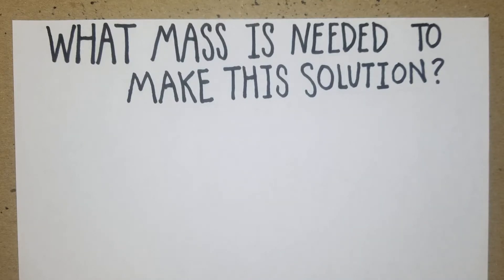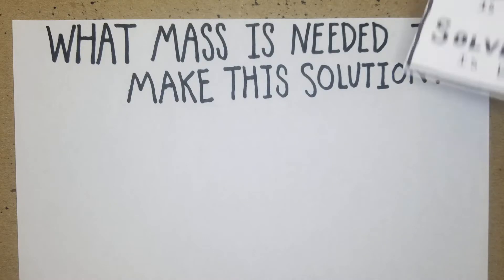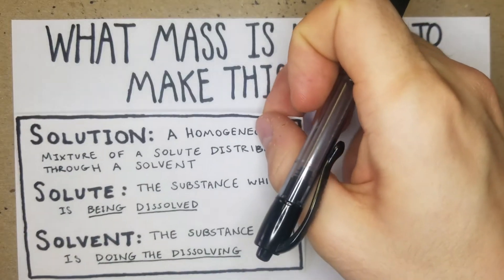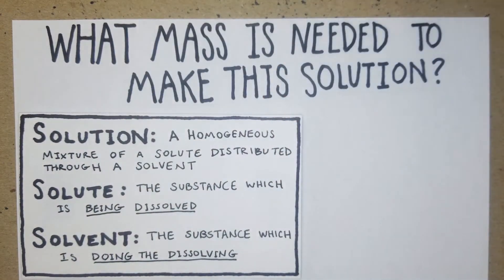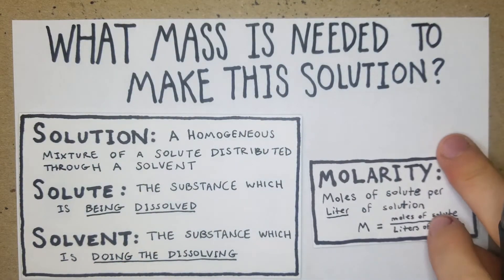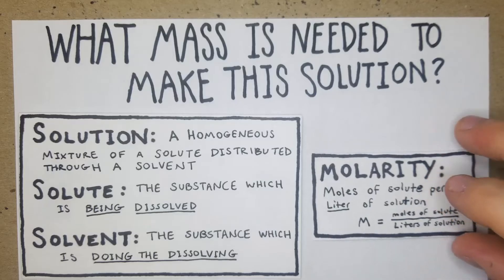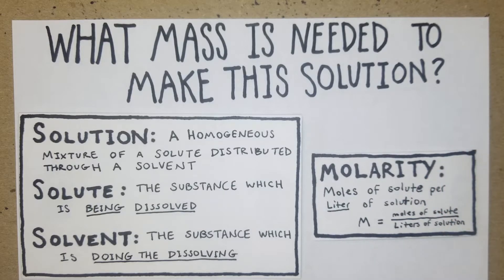In this video we're going to go over the problem types that ask what mass is needed to make a solution with a certain molarity. Solutions are homogeneous mixtures of a solute distributed through a solvent. A solute is what's being dissolved — usually a powder or solid — and the solvent is what's doing the dissolving, with water being the universal solvent.